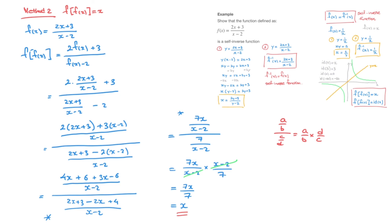Showing that f is a self-inverse function using the composite method takes a lot more time and effort than the first method, where all I did was find the inverse function and show it was equal to f of x. Nevertheless, it is worth knowing about the second method because it could be required in an exam. We now know what self-inverse functions are and have worked through an exam-style question showing that a function was self-inverse.